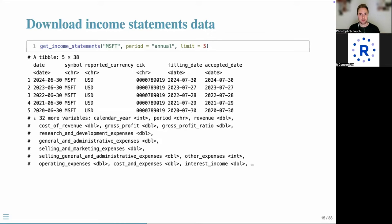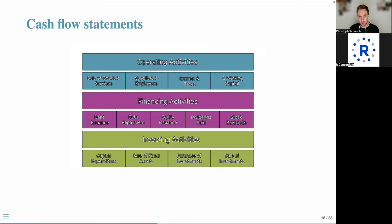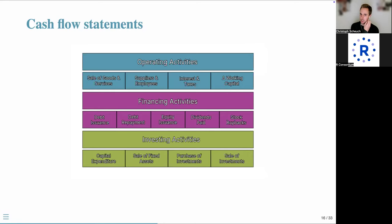The third part of financial statements is the cash flow statement. While it's rarely used for calculating financial ratios, it's a very important component. It shows the flow of cash in and out of the business during a period and whether the company is able to generate cash to fund operations and growth.